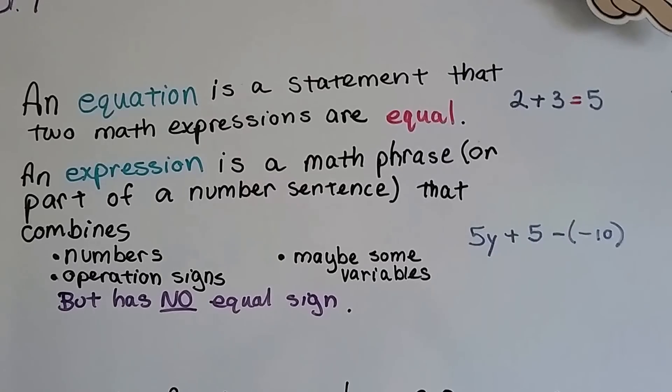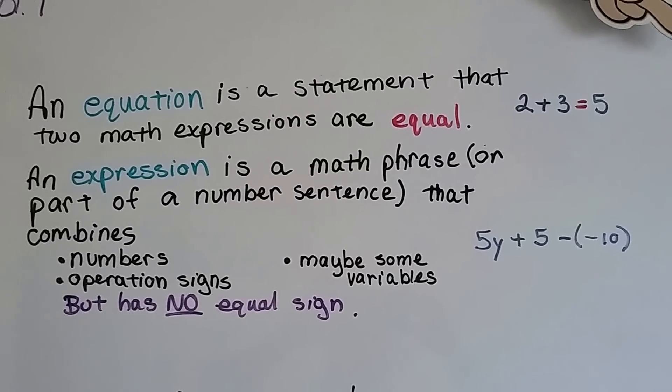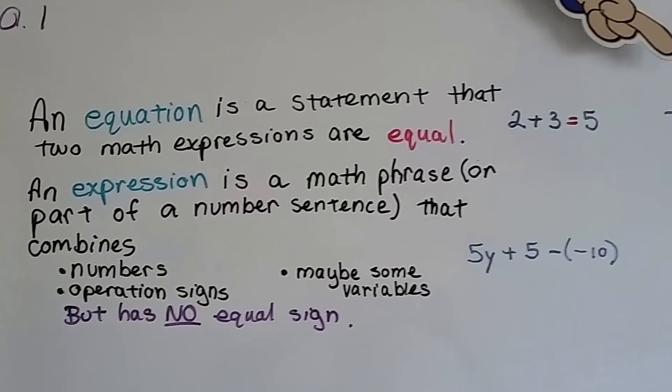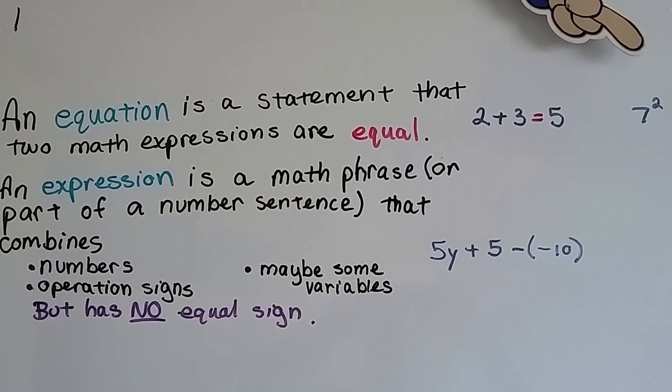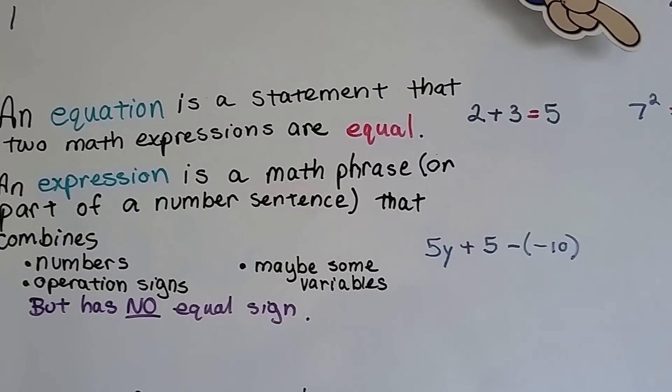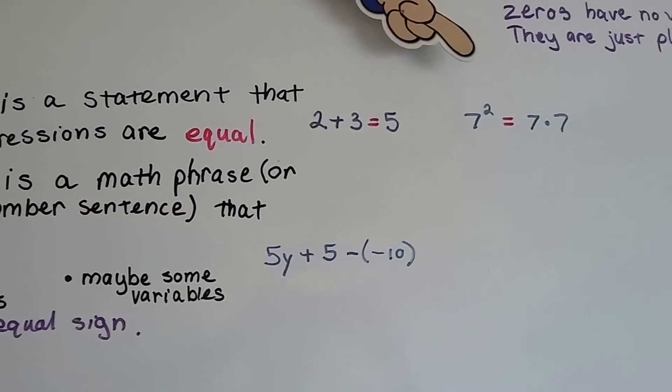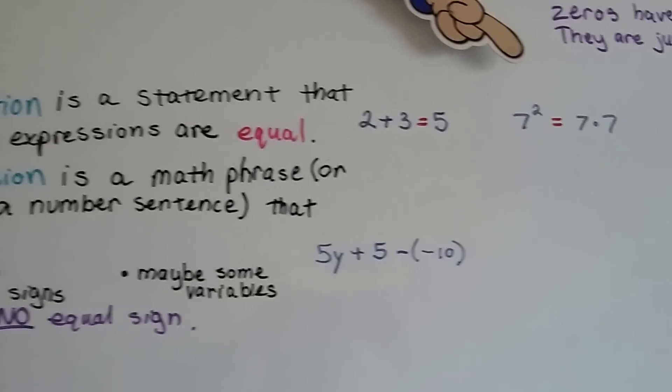An equation is a statement that two math expressions are equal. So notice that equation is E-Q-U-A, and the word equal in pink there is E-Q-U-A. That's going to help you remember that an equation has an equal sign. Like 2 plus 3 equals 5, or 7 squared equals 7 times 7.